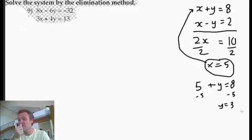And you can check, look at the second equation, x minus y, 5 minus 3, yes that's 2. So the answer for this would be 5 comma 3. That's the easy one. I didn't have anything to do but add them together. Now look at this one.